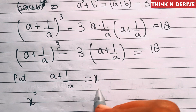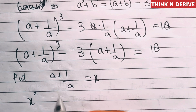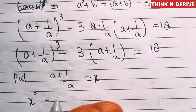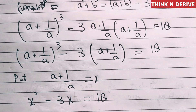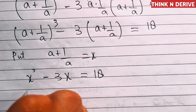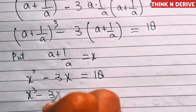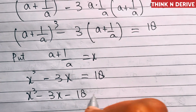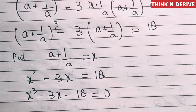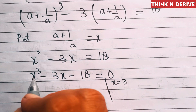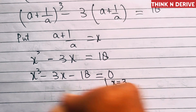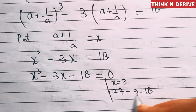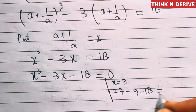Let's put a + 1/a = x. So this equation becomes x³ - 3x = 18, which gives us x³ - 3x - 18 = 0. Now if we try x = 3: 3³ - 3(3) - 18 = 27 - 9 - 18 = 0. So x = 3 is a solution.